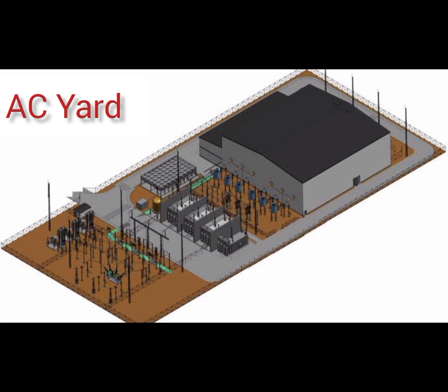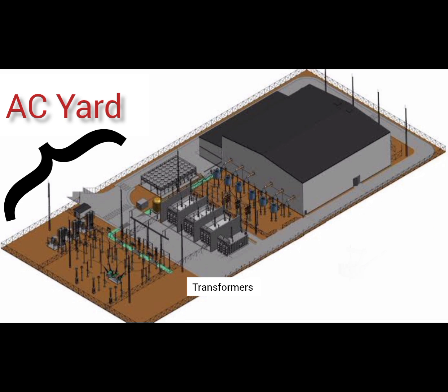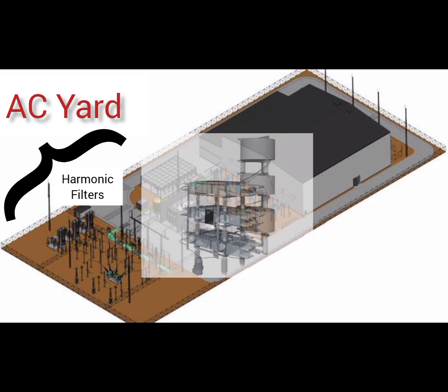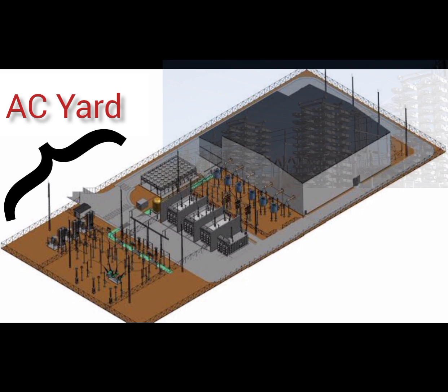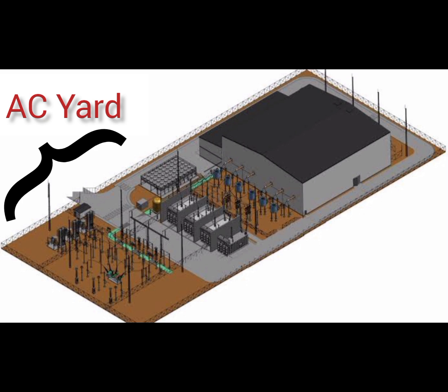AC yard, located on one side of the valve halls, includes switching equipment such as circuit breakers and disconnectors; transformers such as step-up or step-down transformers; and extensive filtering equipment such as harmonic filters, capacitor banks, and capacitor towers for reactive power compensation.